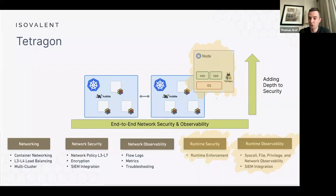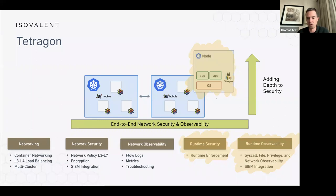Last year was also the year we introduced Tetragon, where we moved beyond just the networking level and added runtime security and runtime observability. This allowed us to not only see the network layer end-to-end, but also see into the applications and into the system — adding depth to the security solution. Instead of just seeing network observability, we're now able to see system calls, file access, privilege escalations, and even network observability not accessible on the wire. We also added real-time runtime enforcement, allowing us to inject policy rules defining what applications are allowed and not allowed to do, and Tetragon enforces those policies.